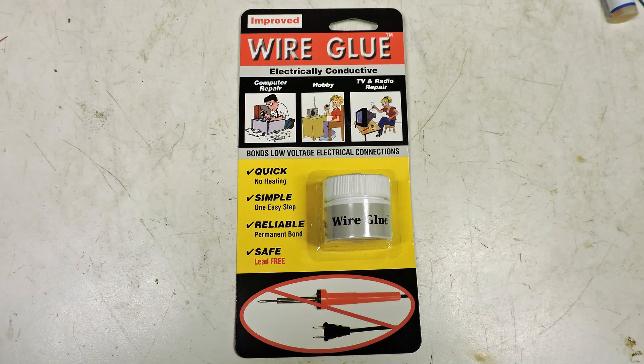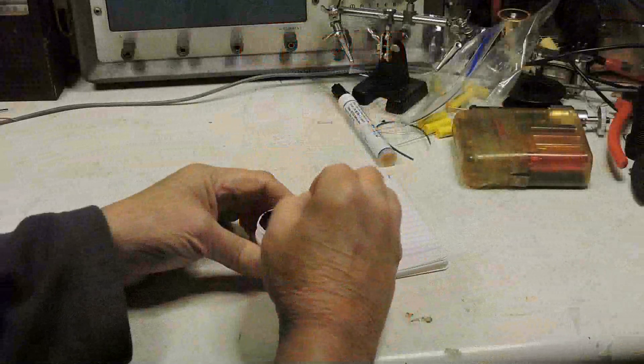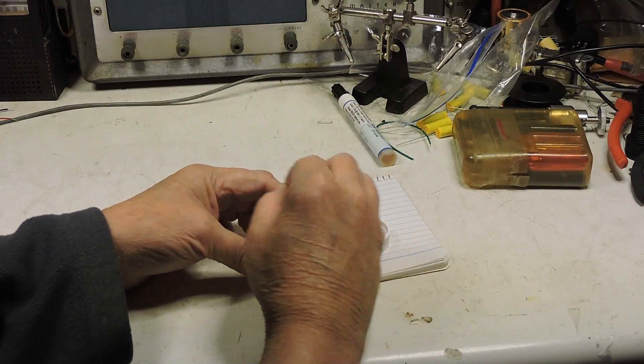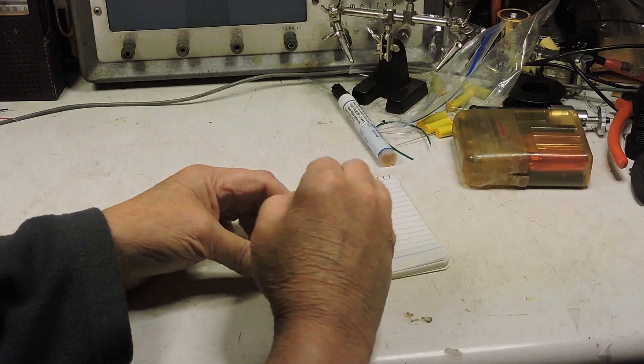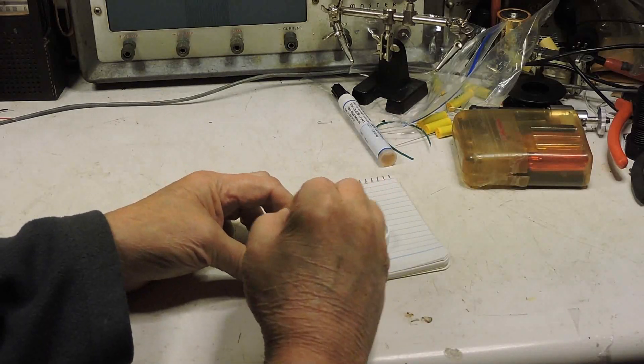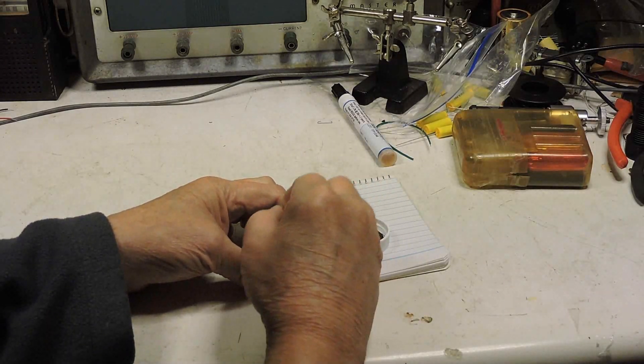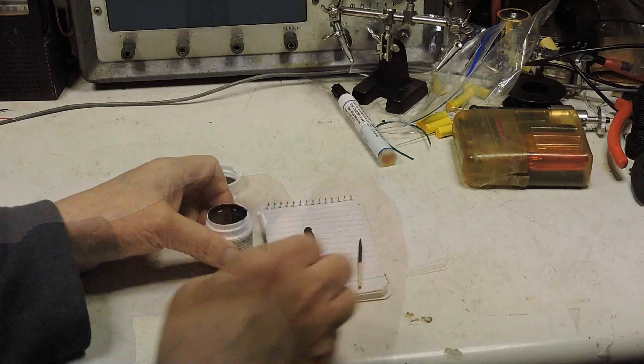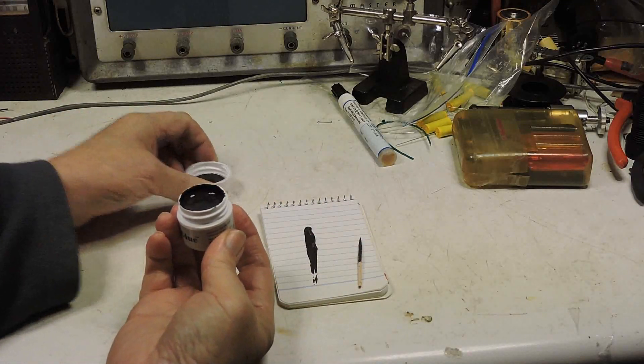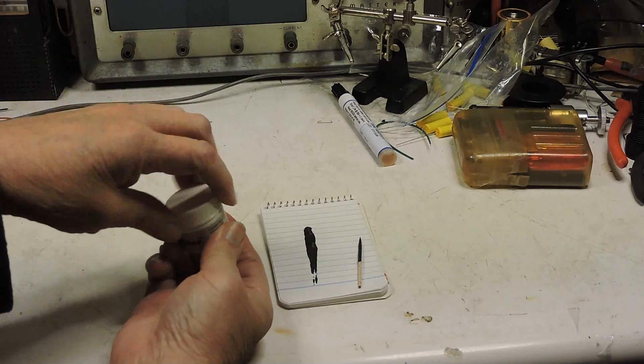I thought I'd see what this conductive glue is about. Following the instructions, I mixed up the glue because it had settled and needed mixing. Then I left a line of glue on this piece of paper and left it overnight.